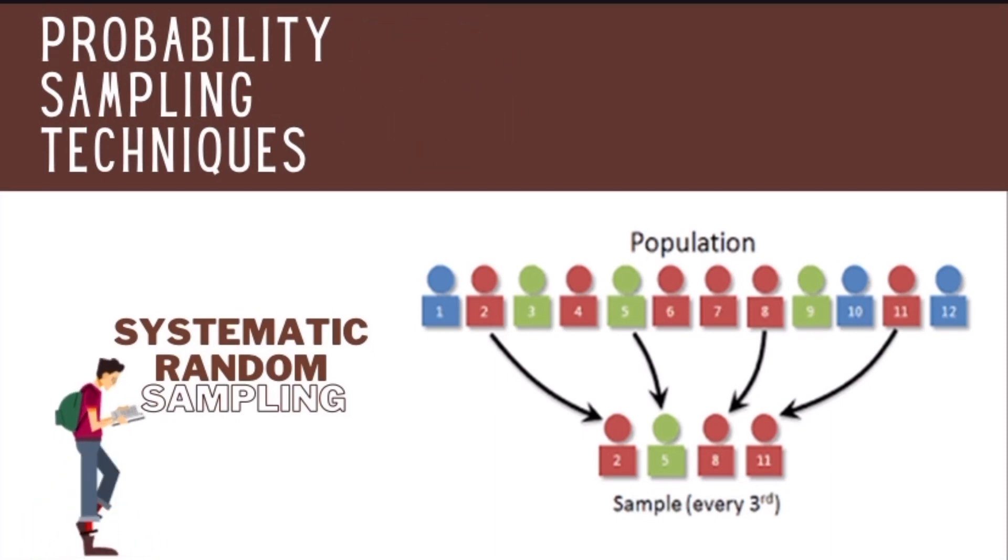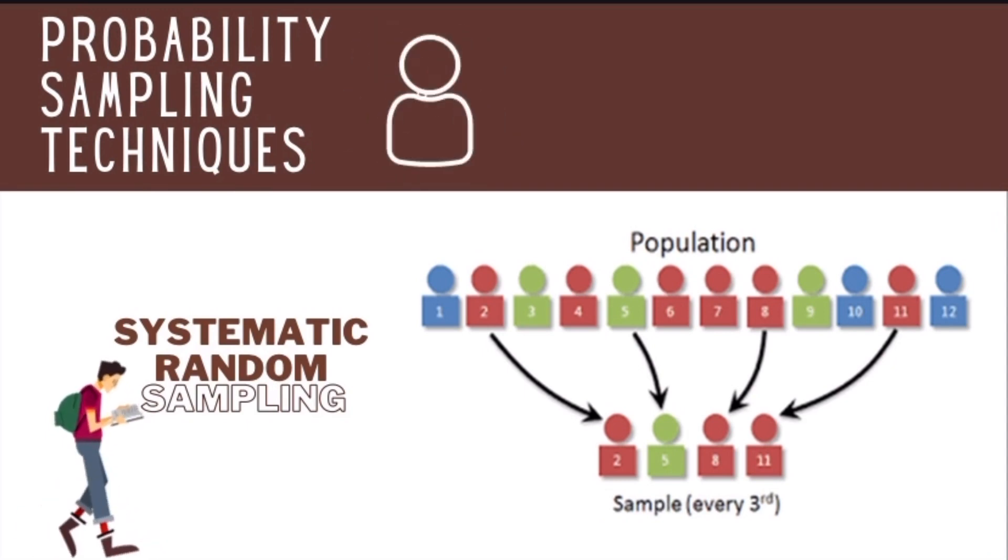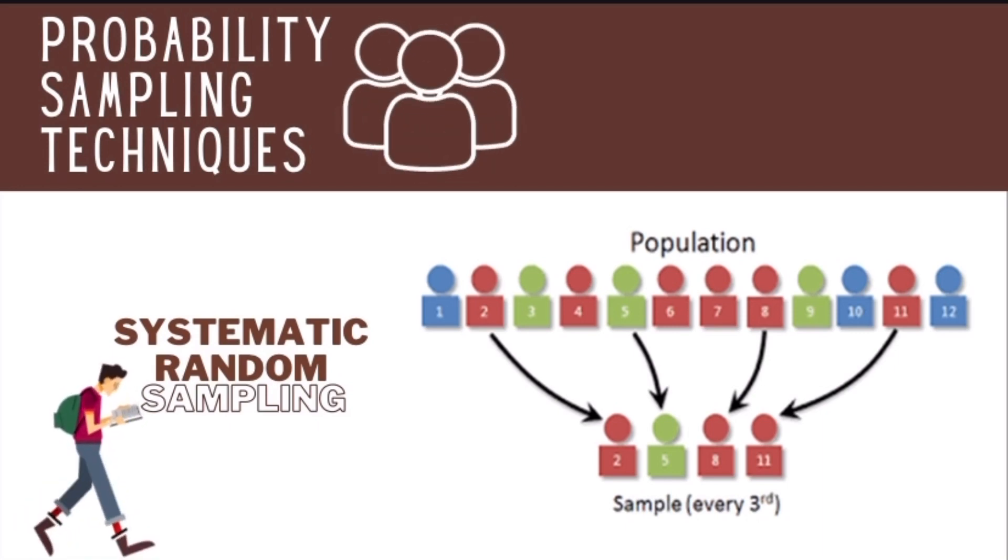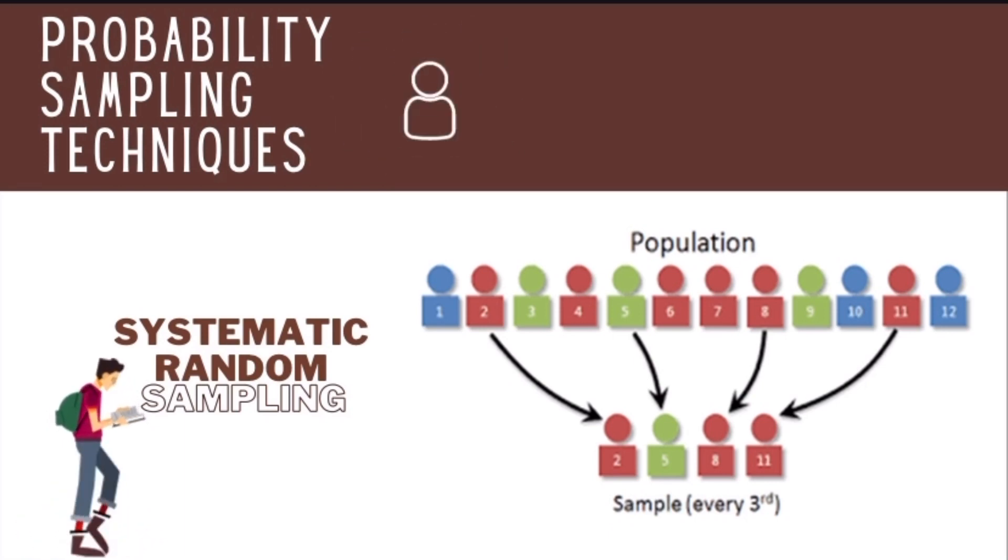Next is systematic random sampling. Representatives from population are selected according to a random starting point but with periodic intervals. Like for example, in this figure, the population is 12 and then you have to select 4 or the sample size is 4. Here the starting point is 2, and then the interval is 3. Paano nakuha yun 3? We have population divided by the sample size, so we have 12 divided by 4 equals to 3. The sample or the respondent could be 2, next is 5, followed by 8, and then 11.